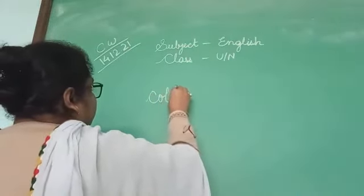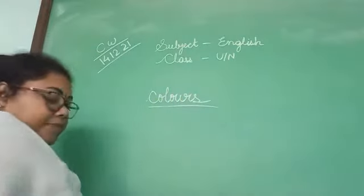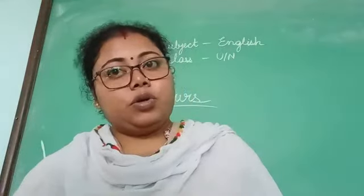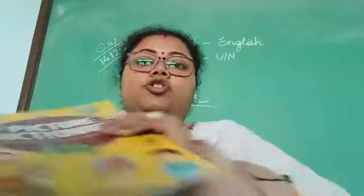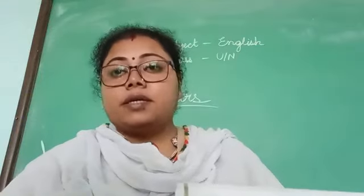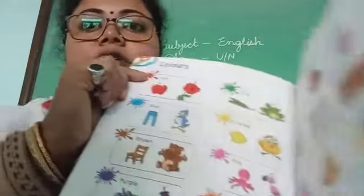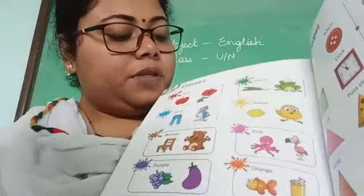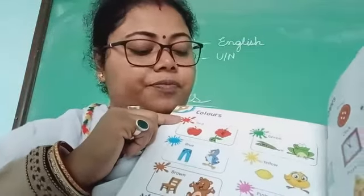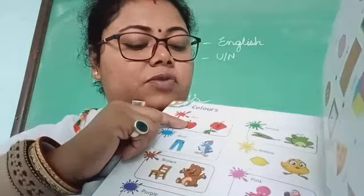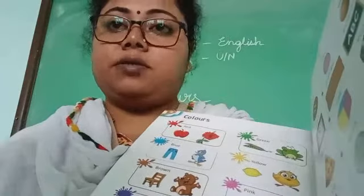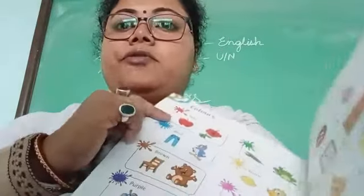C-O-L-O-U-R-S — colors. You know many colors; again we are going to revise them. See the picture dictionary book, page number 68. Here we have many colors. First one — this color is known as red. R-E-D. Red color things are: first, one apple and one flower. This flower is known as china rose or hibiscus. Both are red color.